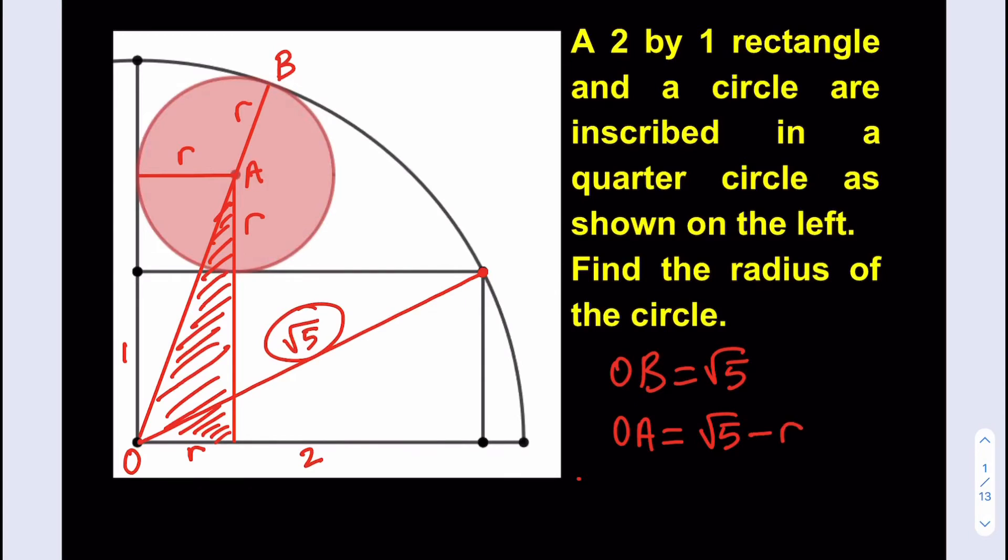So I know OA, and I also know, let's call this point C, I also know OC. And OC is the leg, OA is the hypotenuse, so I just need to know AC. And I know AC as well, because this is 1, right? This is the shorter side of the rectangle. So AC is equal to R plus 1. And OC is equal to R. Awesome. And as you know, OCA is a right triangle, therefore we can use the Pythagorean theorem.